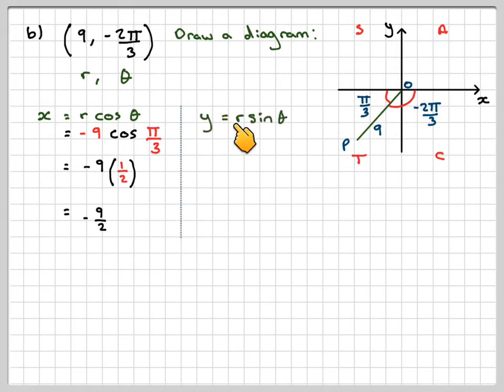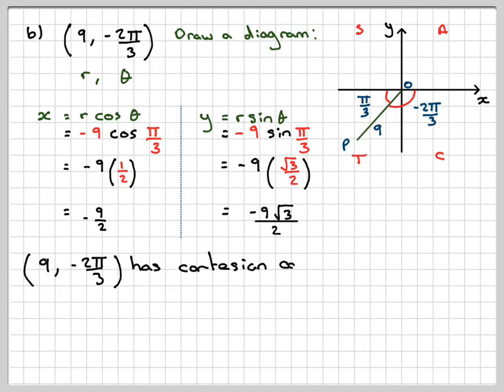And here we have y is equal to r sin theta. Again, cos is actually negative, so it will be minus 9 sin pi by 3, which is minus 9, and sin of pi by 3 is root 3 over 2. So that will be minus 9 root 3 over 2. Therefore, 9 minus 2 pi over 3 has coordinates, Cartesian coordinates, minus 9 over 2, minus 9 root 3 over 2. And don't forget here, we would expect both the coordinates here to be negative when they come out as the final answer.